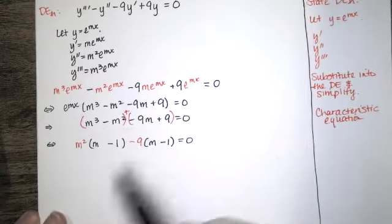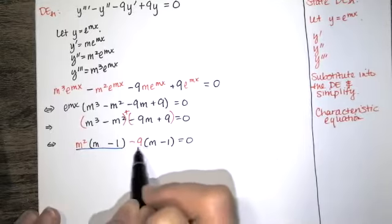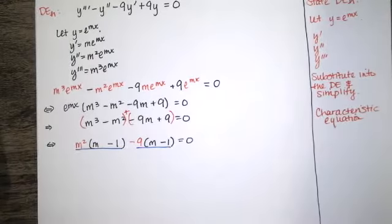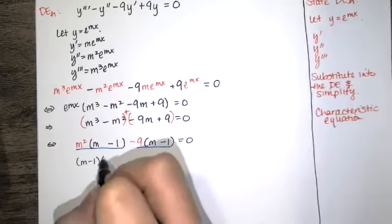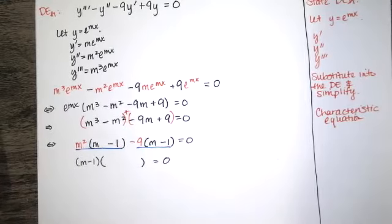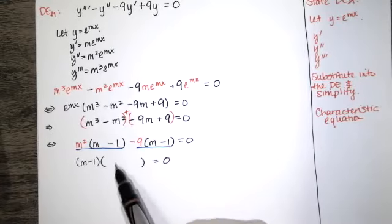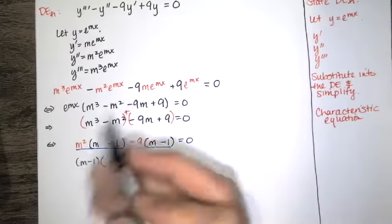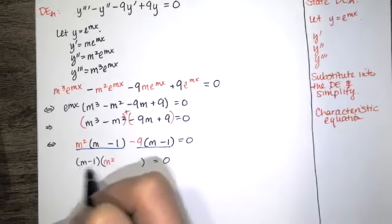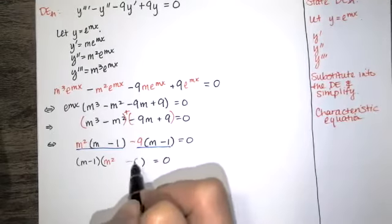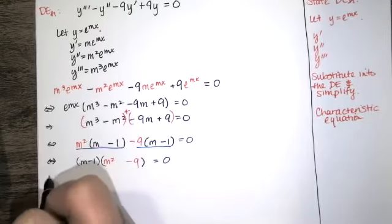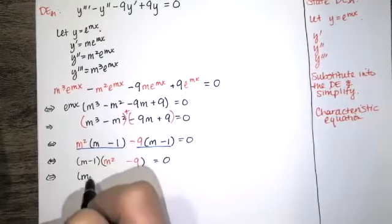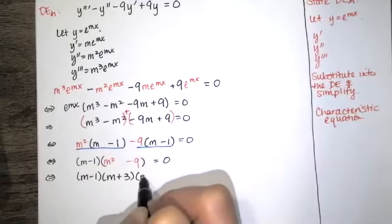We group the two groups and ask what they have in common. Both groups have a factor of m minus one. So this is m minus one times something equals zero. m minus one times what gives the first group? That's m squared. m minus one times what gives the second group? That's negative 9. And m squared minus 9 is a difference of squares, so it factors further to m plus three times m minus three.